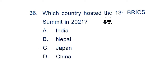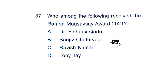Question 36: Which country hosted the 13th BRICS Summit in 2021? Option A is correct: India. It was the third time India hosted the BRICS Summit, after 2012 and 2016. Question 37: Who among the following received the Ramon Magsaysay Award 2021? Option A is correct: Dr. Firdausi Qadri, a Bangladeshi scientist specializing in immunology and infectious disease research.